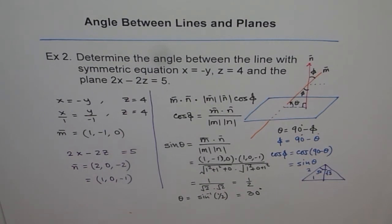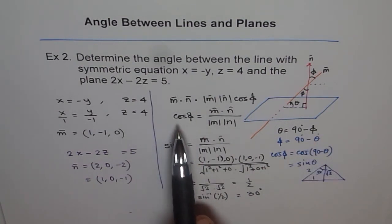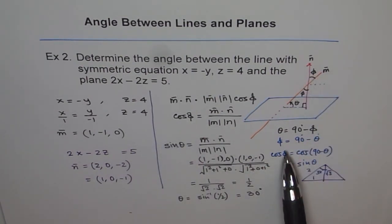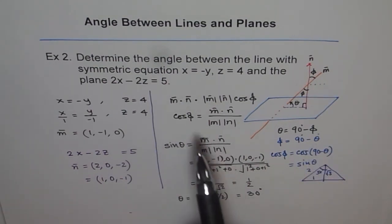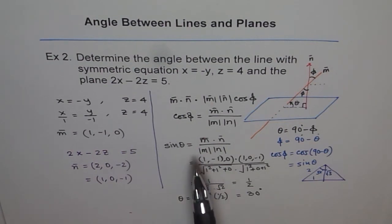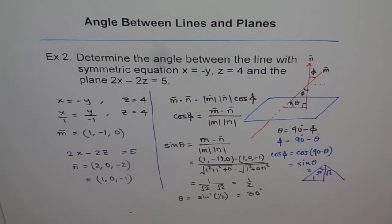To recap: as in Example 1, you can find the angle between the line and the normal, then subtract from 90 degrees to get the angle between the line and the plane. Or you can use the alternate formula sin theta equals the dot product of the direction vector of the line and the normal divided by their magnitudes — either way gives the correct answer. I hope you understand; if you have any doubts, write down your comments. Thank you.